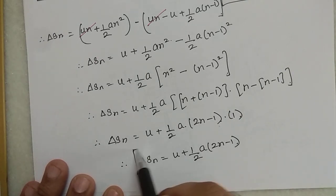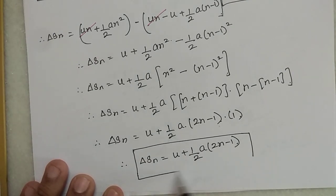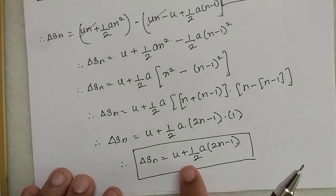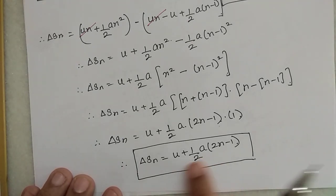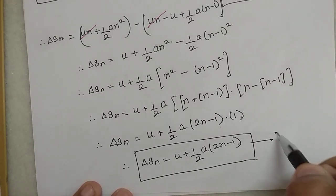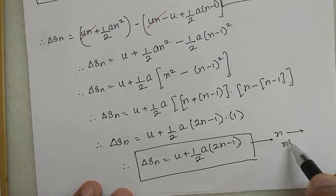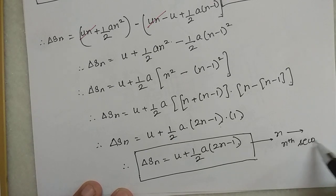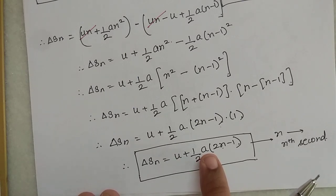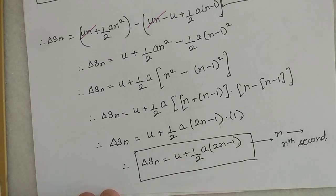So the distance covered in any nth second, the displacement in that second, is given by ΔSn = u + ½a(2n-1). Here n is the nth second for which you want to find the distance covered — put that value of n. This formula can only be used when acceleration is constant, and u is the initial velocity.